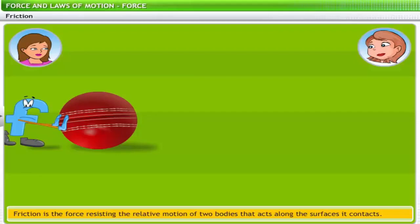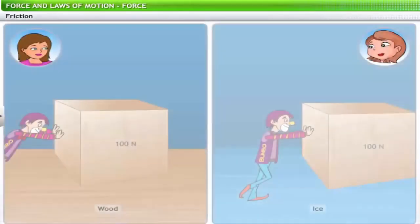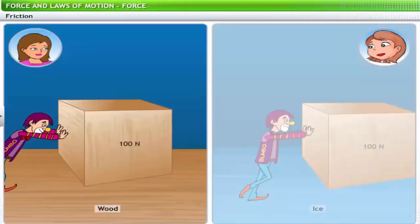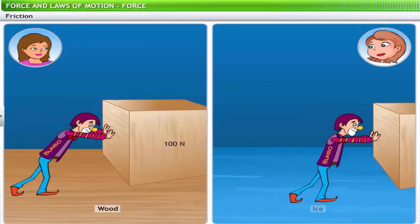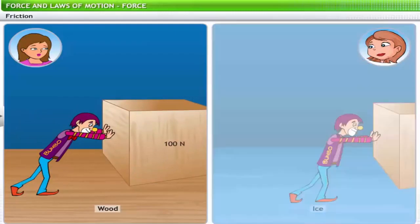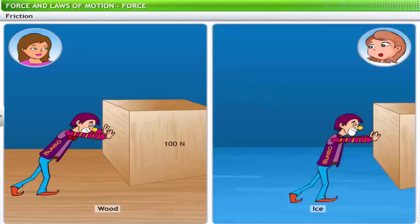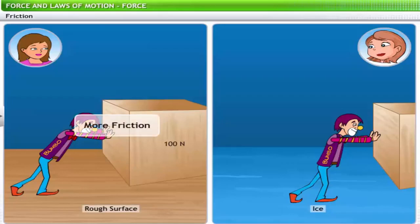Is friction the same on all surfaces? It needed a lot of force to push the block on one surface, yet in both cases it is the same block. So it was the type of surface that made the difference. Rough surfaces offer more friction, while smooth surfaces offer minimal friction.